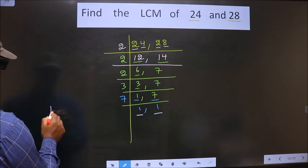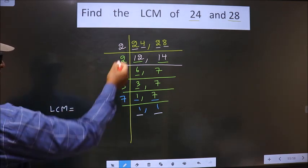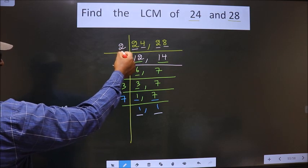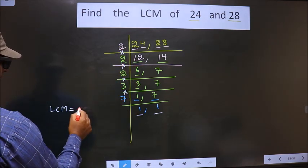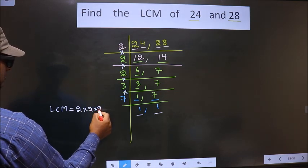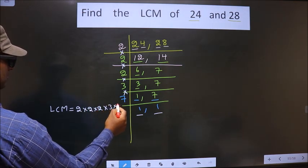So now, our LCM is the product of these numbers. That is, 2 into 2 into 2, into 3 into 7.